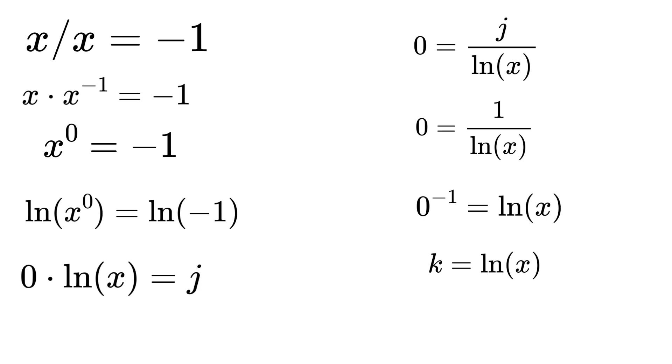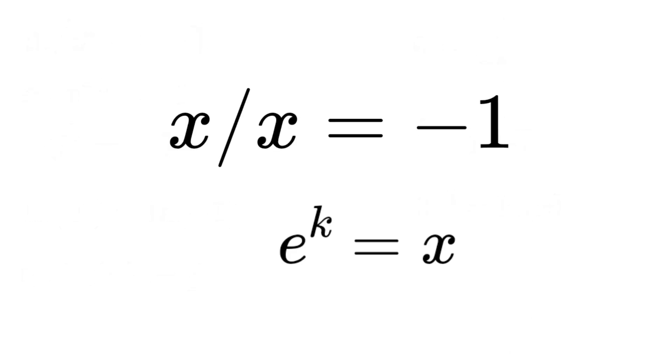Now take the anti-logarithm on both sides so we get e to the power of k equals x. This is what we were trying to find. You can test this value on the original equation. Remember, singularity numbers over singularity numbers is not one.